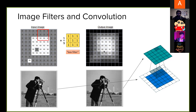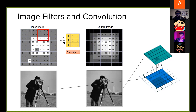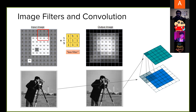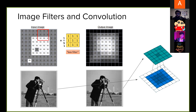Now look at this box in the middle, which I've marked as 'box filter.' There is something called a filter in image processing. A filter is also a matrix of numbers that is smaller than the image itself. For example, this is a 3x3 matrix — you'll learn more about the mathematics of matrices in grade 11 or 12. This filter is 3x3 and all the values are 1/9, so we have nine numbers each equal to 1/9.